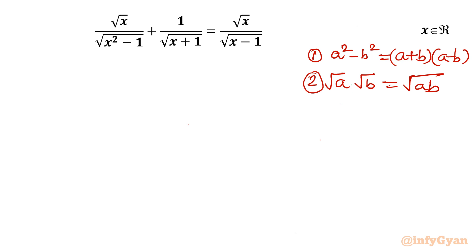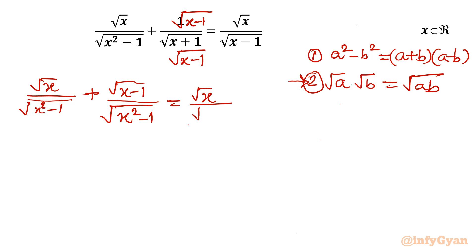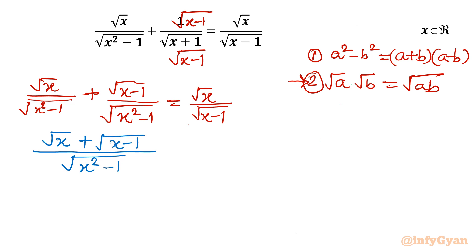I will begin by multiplying the second term's numerator and denominator by square root of (x minus 1). This gives: square root x over square root(x²-1), plus square root(x-1) over square root[(x+1)(x-1)], which equals square root(x²-1). So the left-hand side now has a common denominator of square root(x²-1), giving [square root x + square root(x-1)] over square root(x²-1), equal to square root x over square root(x-1).